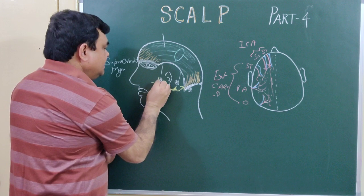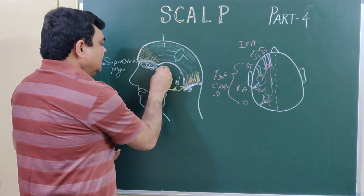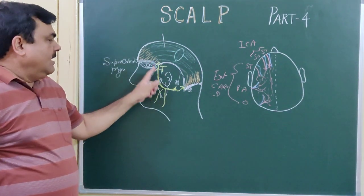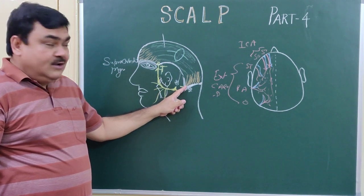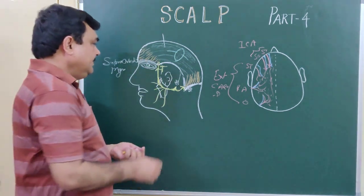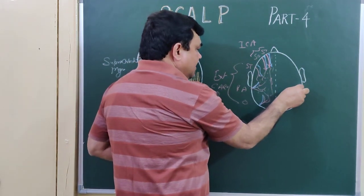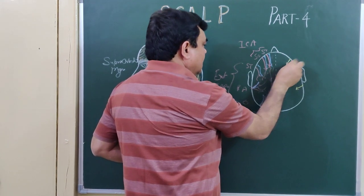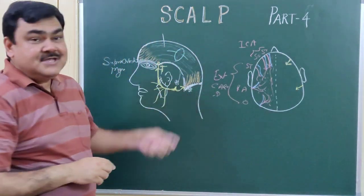The facial nerve gives five branches. This temporal branch of the facial nerve gives supply to the frontal belly. The occipitofrontalis is supplied by two branches of the facial nerve: the posterior auricular branch supplies the occipital belly, and the temporal branch supplies the frontal belly. These are the motor branches.